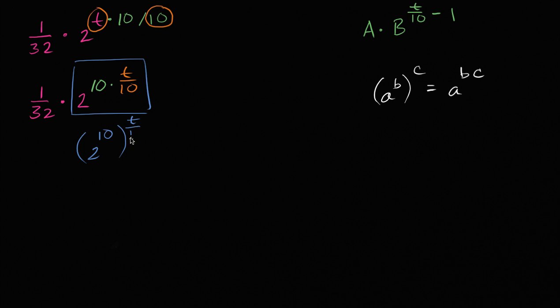2 to the t over 10 power. Once again, 2 to the 10th and then raise that to the t over 10, that's going to be the same thing as 2 to the 10 times t over 10. And of course, we still have the 1 over 32 over here. And I'm tempted to write that as 2 to the negative 5th power, but I won't do that just yet.